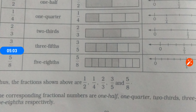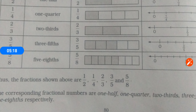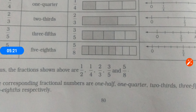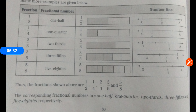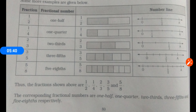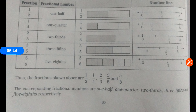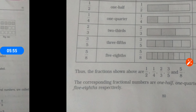Next is three-fifth. Five boxes, three are shaded. On the number line, draw O to A, divide into five parts, and where three by five falls, represent it with a point — you can call it P, Q, R, or any name. Similarly for five-eighths. The fractions shown are one-half, one-fourth, two-third, three-fifth, and five-eighth. The corresponding fractional numbers are read as: one half, one quarter, two third, three fifth, and five eighth respectively.